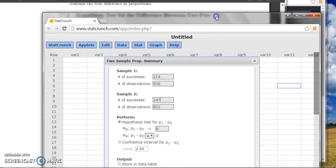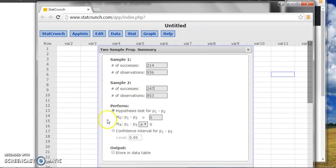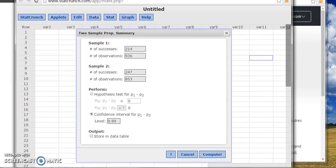Now because we calculate confidence interval, under Perform you can click on Confidence Interval, because we need 99% confidence interval, so you can change the 95 to 99.